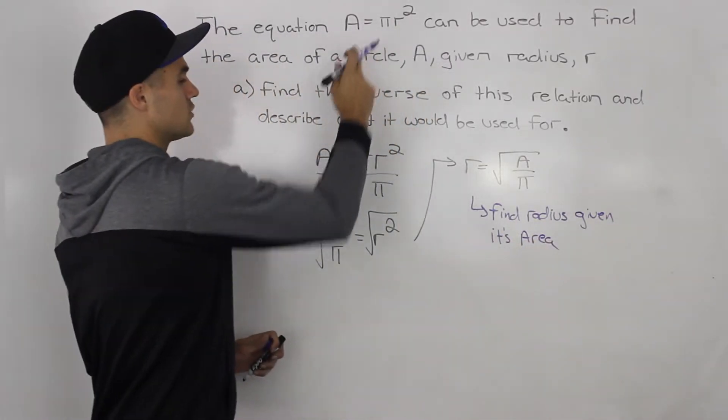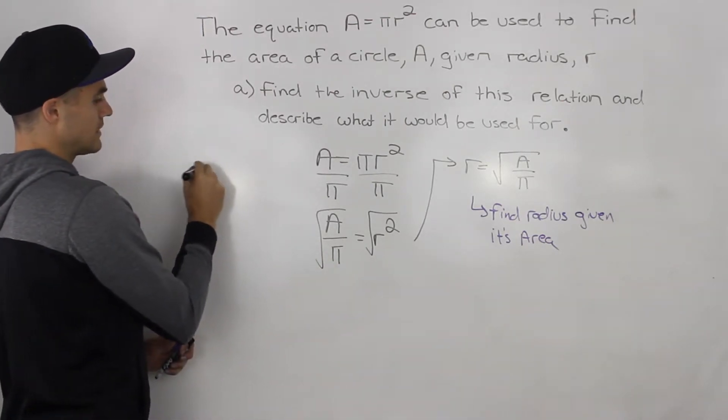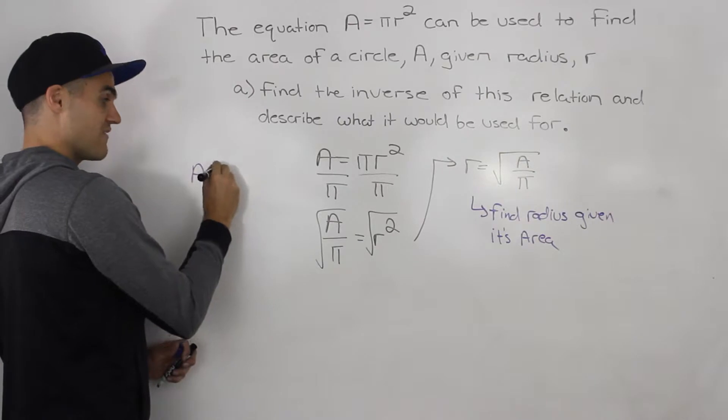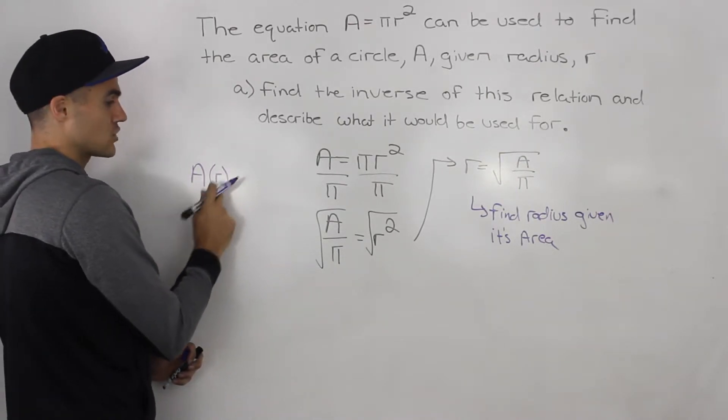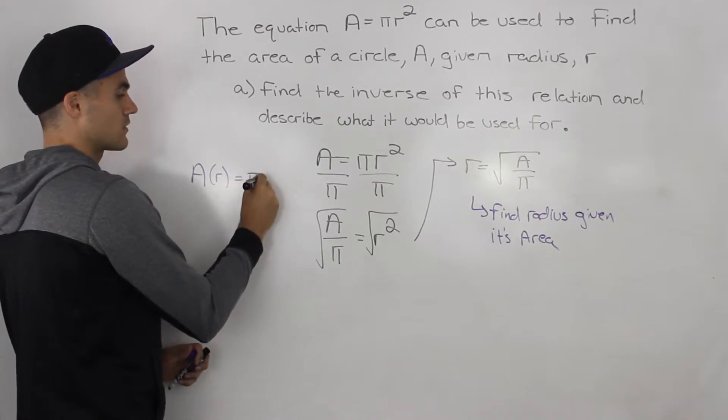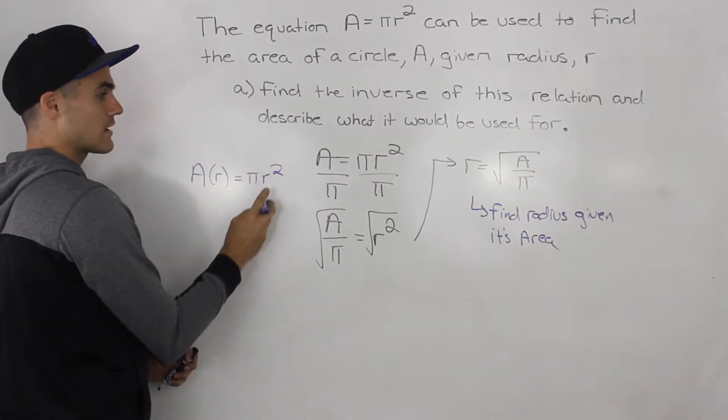So in the original equation, what was happening was we were finding the area of a circle given its radius. It was a function of A in terms of r, which was πr². Right? So we were finding the area given the radius.